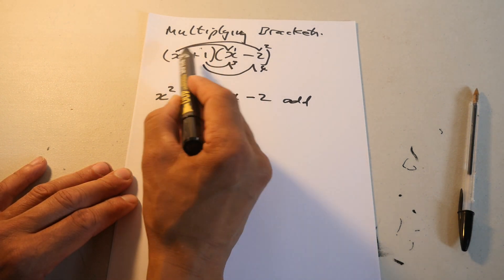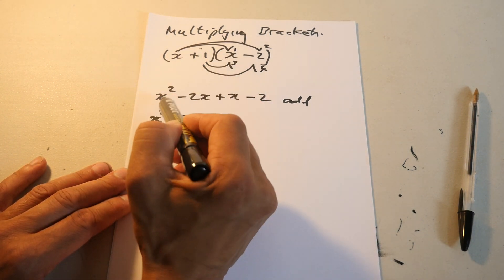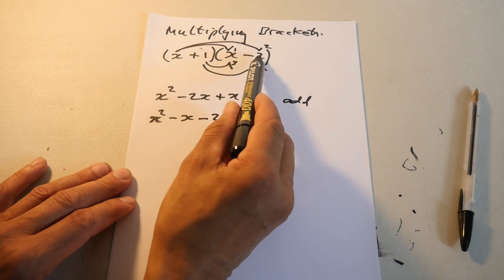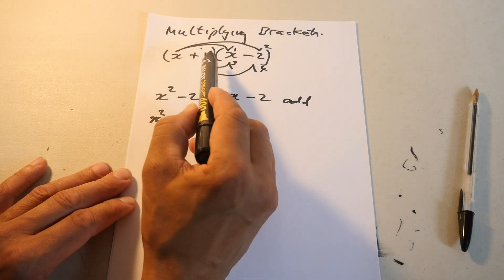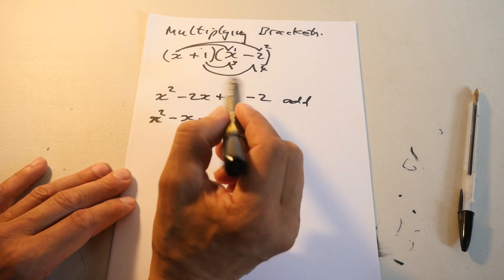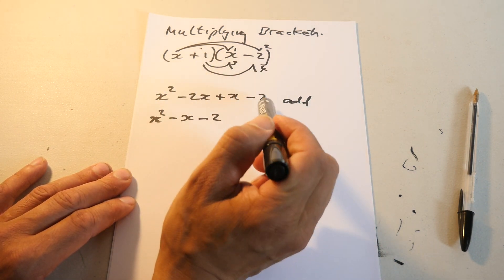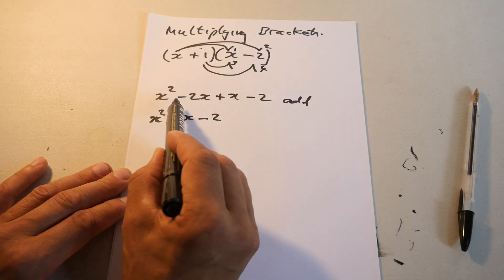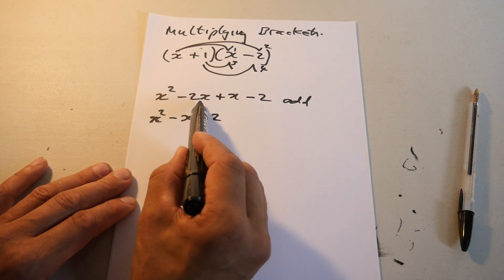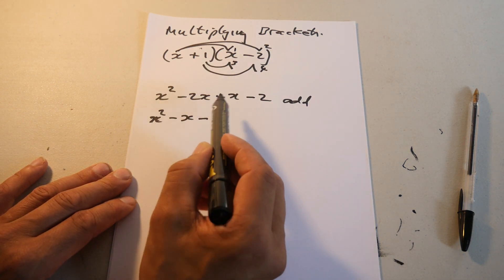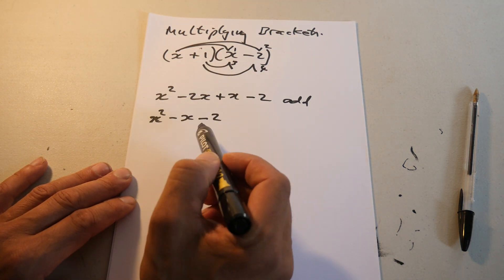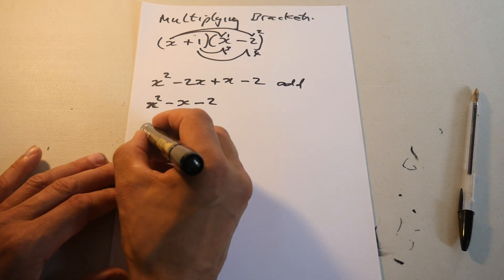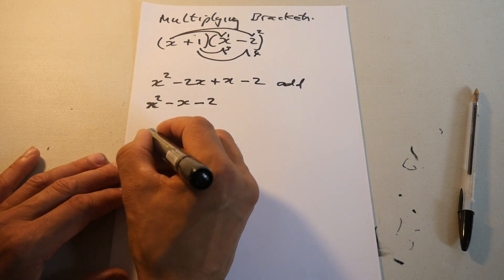So those two: x times x is x squared, x times minus 2 is minus 2x, 1 times x is x, 1 times minus 2 is minus 2. Minus 2x plus 1x is minus x, then minus 2.